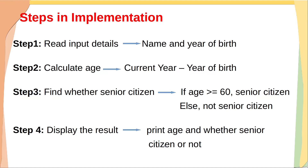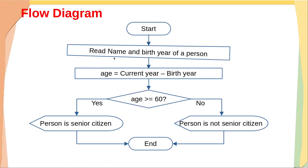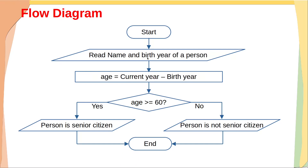These steps can be represented in a flowchart. After start, we read the name and birth year, then calculate age as current year minus birth year. We then compare age with 60: if age is greater than or equal to 60, the person is called a senior citizen. If false, the person is called not a senior citizen.